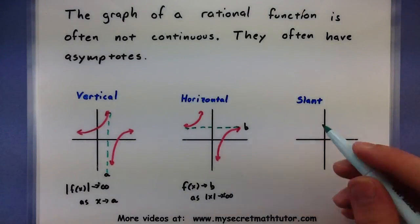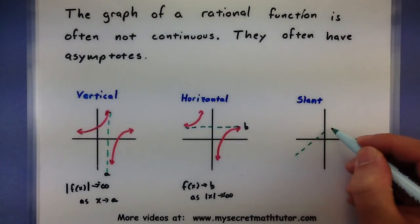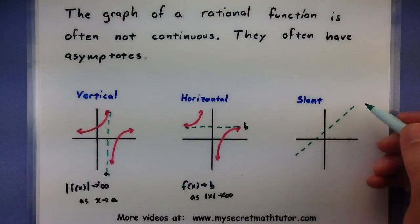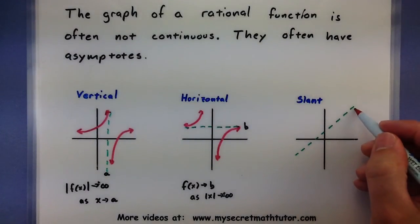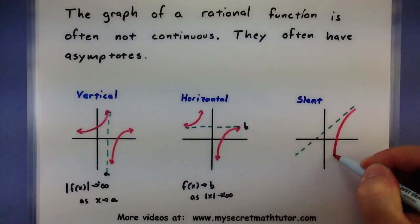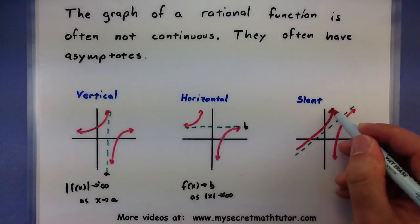And one last type of asymptote that you might see with these rational functions is a slant asymptote. These are also sometimes called an oblique asymptote. So now our function wants to look like the slant.